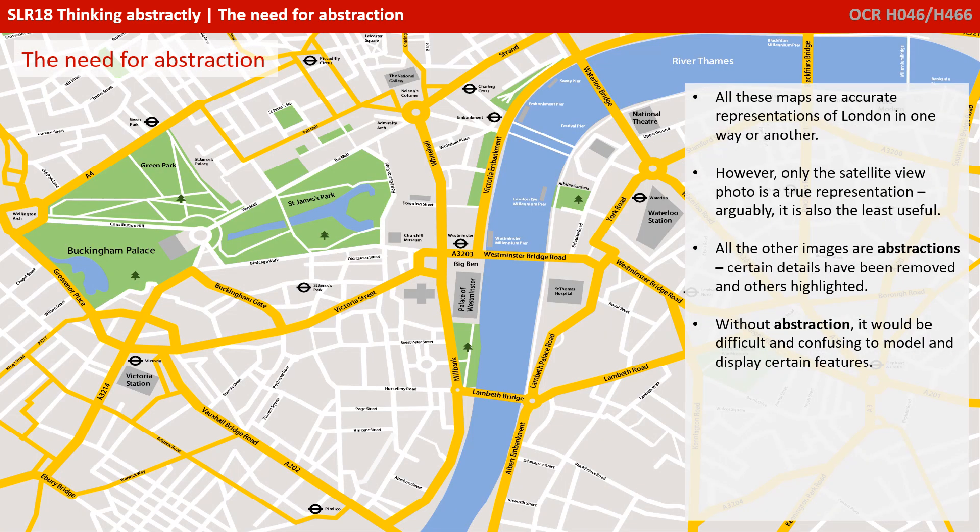All these maps are accurate representations of London in one way or another. However, it's only the original satellite view photo which is a true representation, although arguably the least useful. All the other images are abstractions — certain details have been removed and others highlighted. Without abstraction, it would be difficult and confusing to model and display certain features.